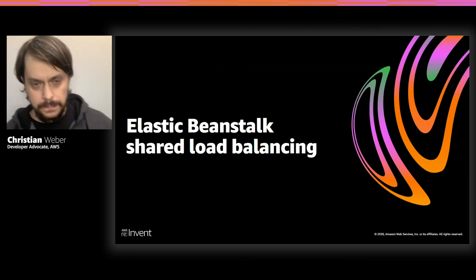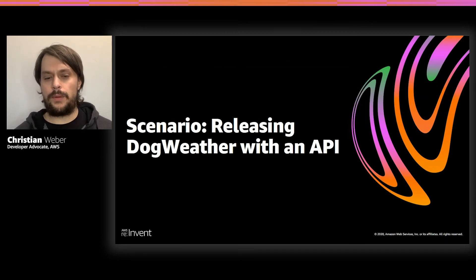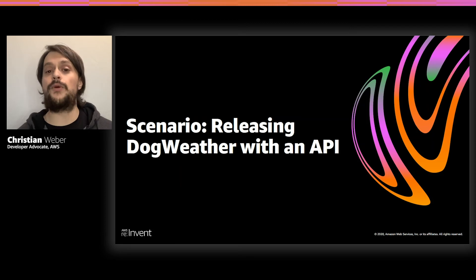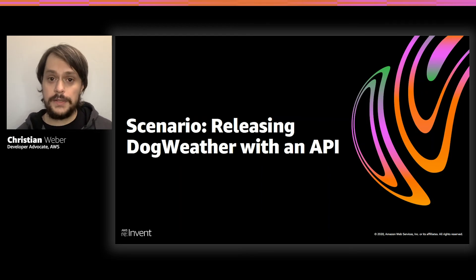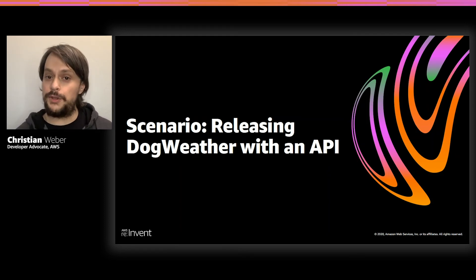Now let's talk about shared load balancing. One of the biggest pieces of feedback the Elastic Beanstalk team has received is that the previous way of managing load balancers could be complex and expensive. If you do the napkin math, running a single load balancer at minimum capacity is roughly about $15 per month. But many customers are running multiple environments and deploying multiple applications. If we have a one-to-one mapping of load balancers to environments, that can get very expensive very quickly. The team took in this feedback and set out with a goal of making it possible for customers to use a shared load balancer across multiple Elastic Beanstalk services or other AWS services as well.